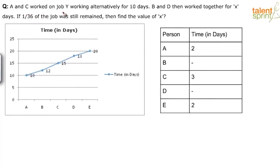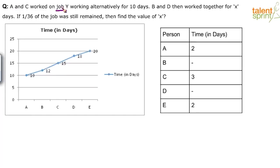The question says A and C worked on job Y, working alternatively for 10 days. B and D then work together for x days; if 1/36 of the job was still remaining, find the value of x. Basically they are working on job Y which requires similar efforts, so the given graph is applicable for jobs X, Y, Z — all three of them. A and C worked alternatively for 10 days.